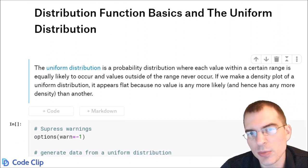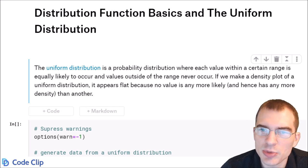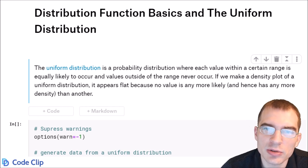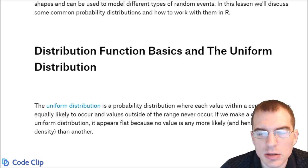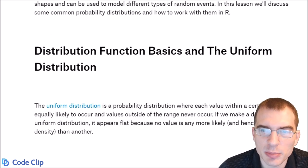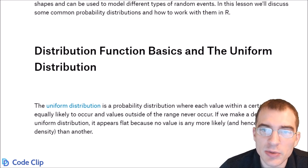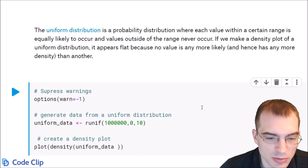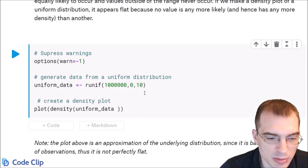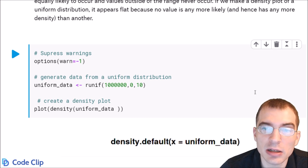The uniform distribution is a probability distribution where every single value is equally likely to occur. We'll start by generating a bunch of numbers using a uniform distribution and plotting it so we can see what it looks like. We're going to generate uniform data on the range from 0 to 10.